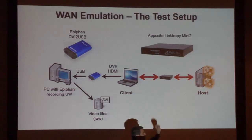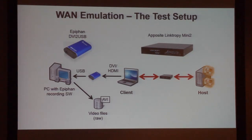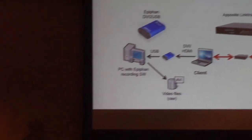Between the client and the host we have a WAN emulator — the Linktropy Mini 2 as of today, which allows us to configure different network settings. For Phase 7, we're switching to an Apposite Netropy N60, which gives us gigabit speed emulation and multiple test scenarios. We're also switching the Epiphan DVI-USB to a PCI-DVI encoder that will give us much higher frame rates and resolution. The issue is that when we started recording high-end graphics, this box can only do 10 to 15 frames per second and introduces artifacts into the videos that were not there on the client — so we need better hardware.